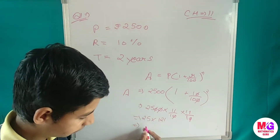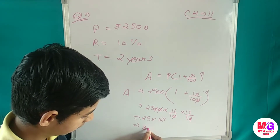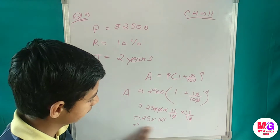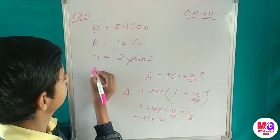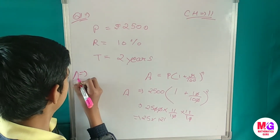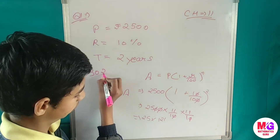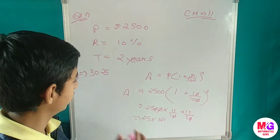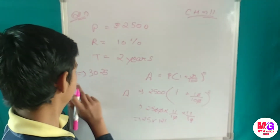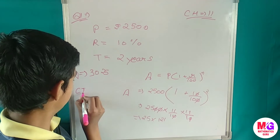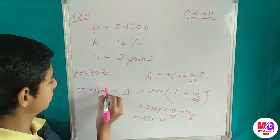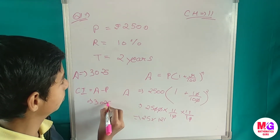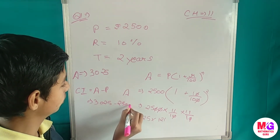After multiplying, we get the amount as rupees 3025. Now to find the compound interest: Compound Interest equals Amount minus Principal, so 3025 minus 2500.